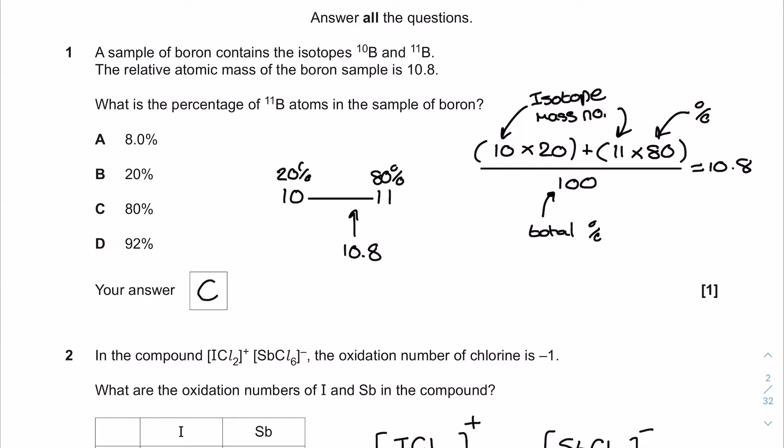Kicking off with question one. A sample of boron contains the isotopes 10 and 11, and the relative atomic mass of the boron sample is 10.8. What's the percentage of boron-11 atoms? If you compare the two isotope mass numbers, there's only one unit between them, and the average is 10.8. The 0.8 means there's a weighting of 80 percent towards the 11. So I'm going to suggest 20 percent and 80 percent for the 10 and 11 respectively. Checking this calculation gives 10.8, so the correct answer is C.